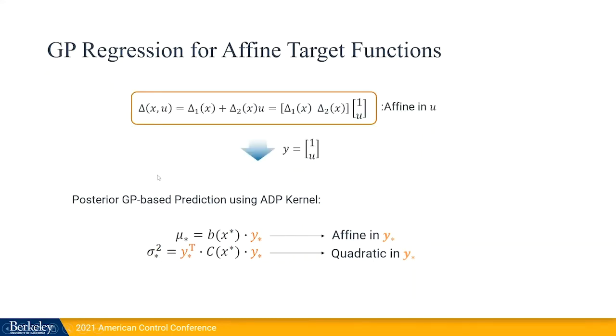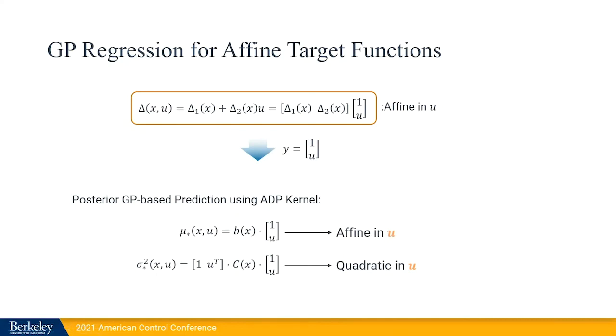So going back to our problem in which we try to estimate delta, delta is affine in u. So if we use y equals 1 and u, then what we get by using this affine dot product compound kernel is a prediction whose mean is affine in u and whose variance is quadratic in u. And this is going to be very important to preserve the convexity of the optimization problem that we're going to formulate.